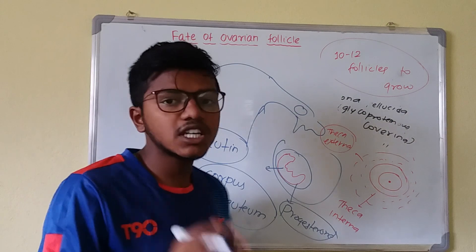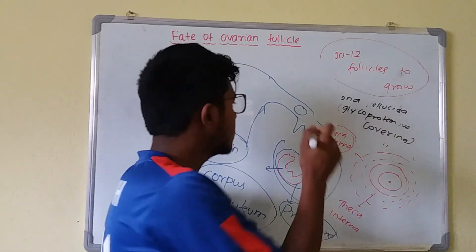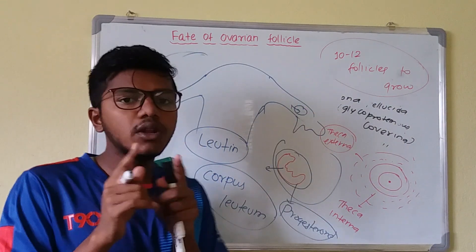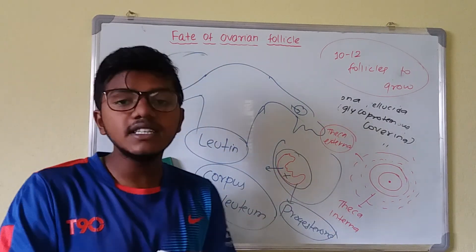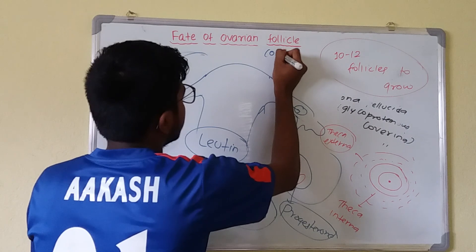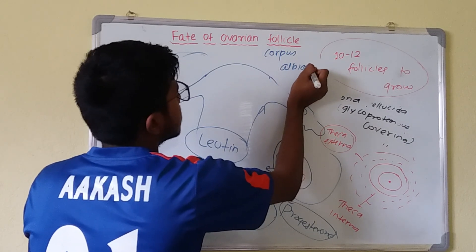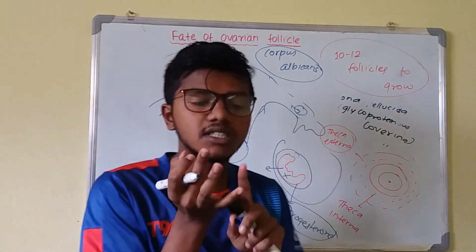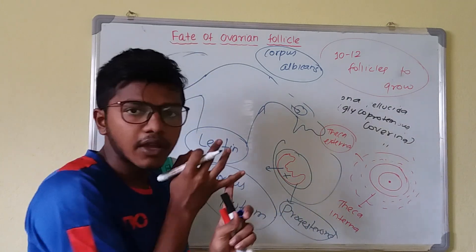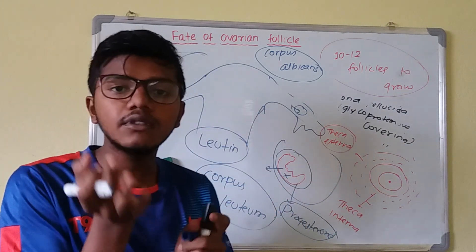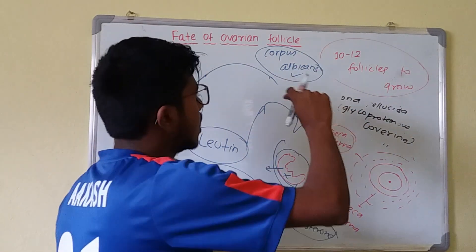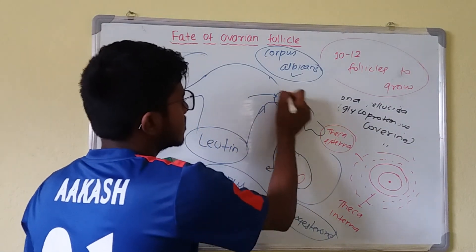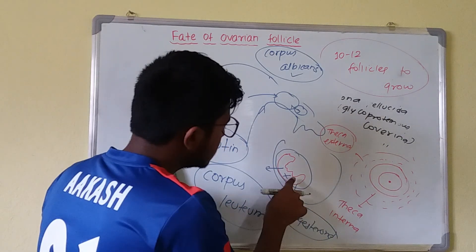If after 14 days the sperm has not fertilized the ovum — which is arrested in the secondary oocyte stage — the corpus luteum undergoes degeneration and is known as corpus albicans. Corpus albicans is composed of follicular cells that have gone through corpus haemorrhagia and corpus luteum stages but no longer secrete progesterone.